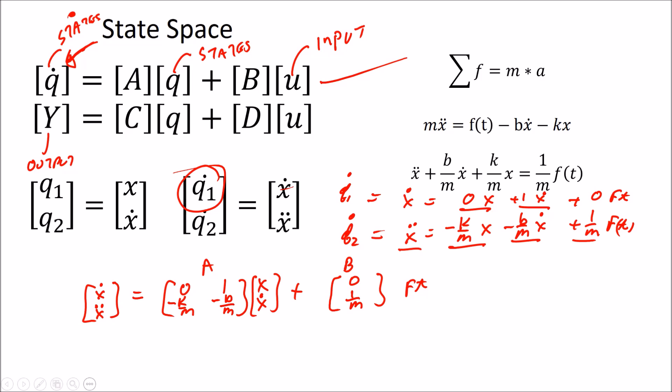My output, well, we haven't specified what we want for an output. Let's just assume our output is x. So y as our output is equal to x equals 1, 0, our C matrix, times x, x dot, our states, plus 0 times f(t), our forcing input. Okay, that's our D matrix. So that is our system in state space form.